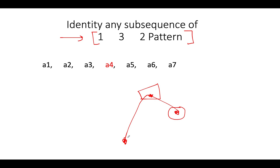We are looking for three elements such that this graphical structure gets formed. Let's take a hypothetical scenario where elements a1, a2, a3, a4, a5, a6, and a7 are given. Let's consider a4 as acting as the peak of the entire array — meaning it has the highest value. Now comes the concern: what will you consider towards the left of a4 and towards the right of a4?